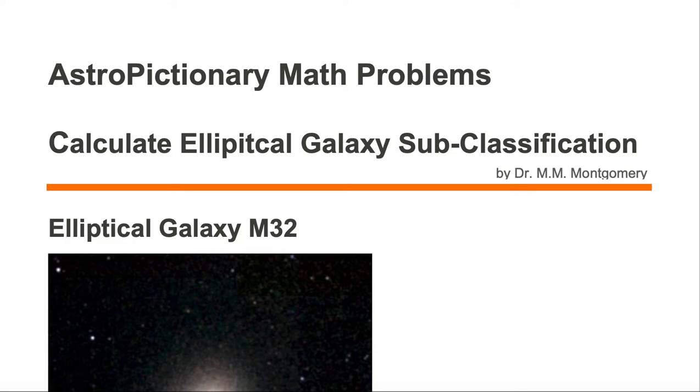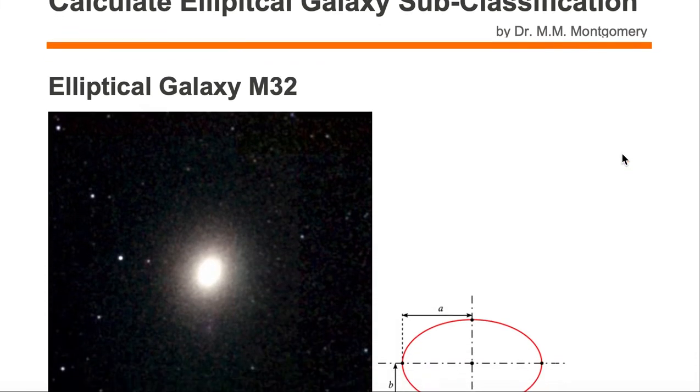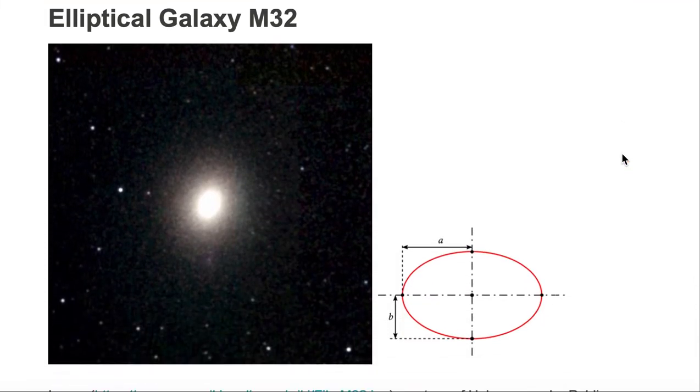We would like to calculate an elliptical galaxy subclassification number. Let's take a look at the example of elliptical galaxy M32. Notice how oval the galaxy appears. It looks quite oval.